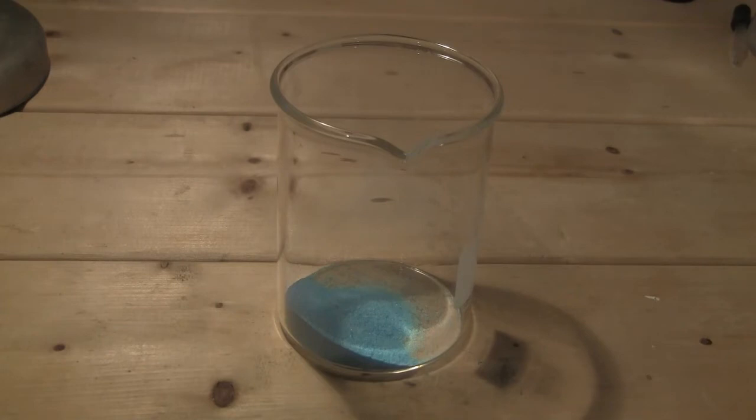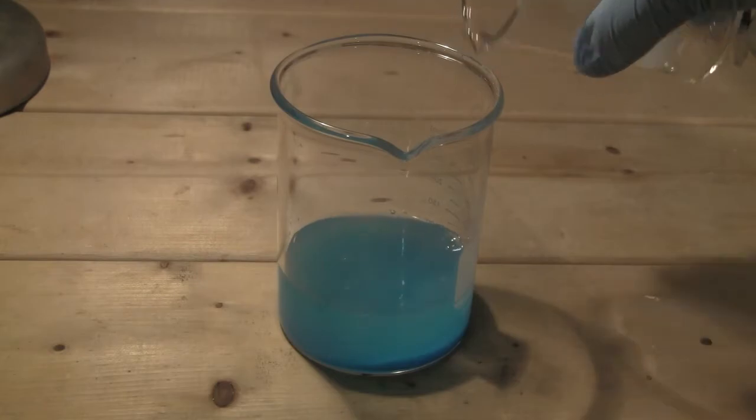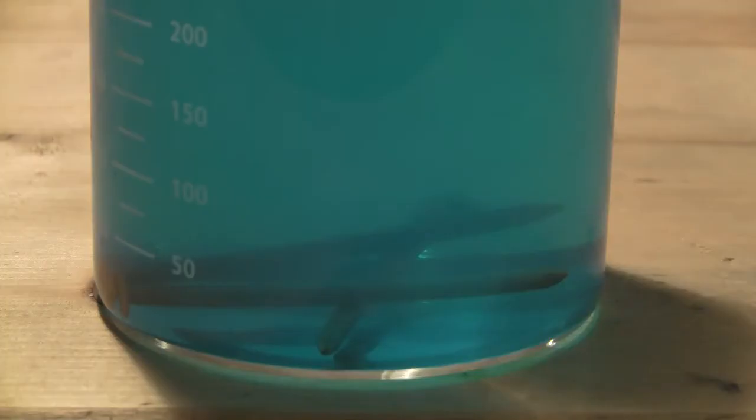To a beaker, the copper sulfate pentahydrate is added and dissolved in 125 milliliters of distilled water. Once the copper sulfate is dissolved, about four iron nails are added to the solution and allowed to sit.